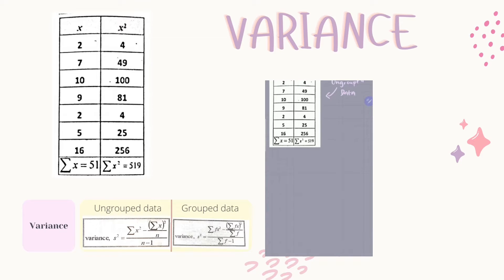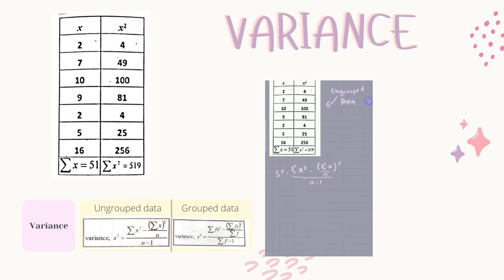We need to write down the formula, which is S squared equals the sum of x squared minus the bracket sum of x squared over N, all divided by N minus 1. So we just substitute. The sum of x squared we can get from the data, which is 519, substituted into the equation, minus 51 squared.